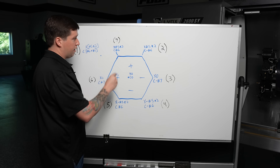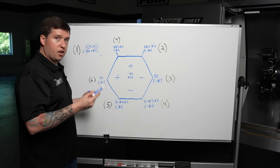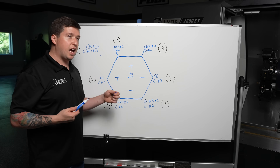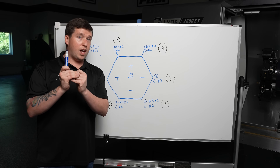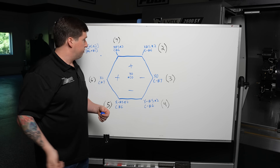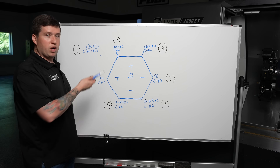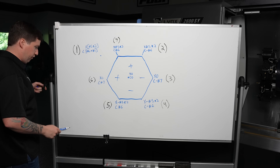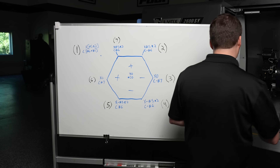That is what I do when I write down macros — I draw the hexagon, plot the points, and see what I did to get them. That's the thought process behind this macro. Now we need to take these positions and put them into a program so we can make a part.